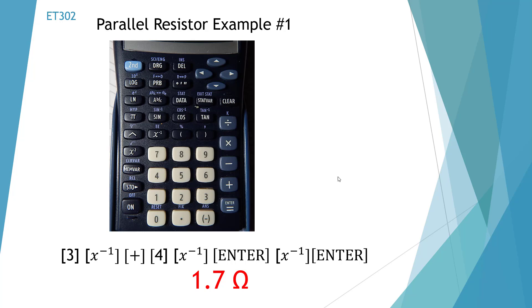Here I'm showing the keypad of our calculator and I'm going to show you how to do the parallel resistor example. And we're going to push the 3 key, inverse key x to the minus 1, plus 4, inverse x to the minus 1. Enter. We're going to do inverse again and then enter and we're going to come up with 1.7 ohms.